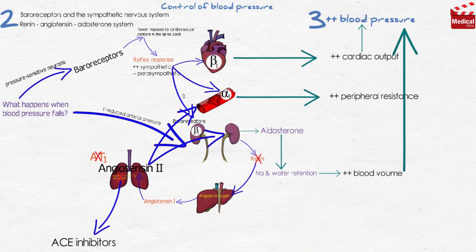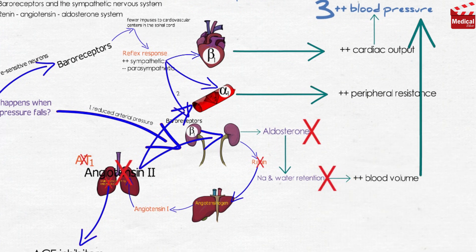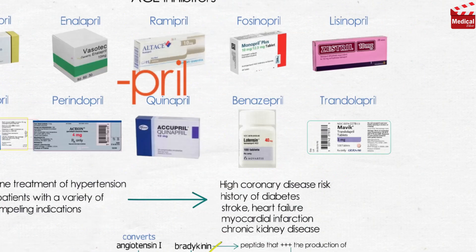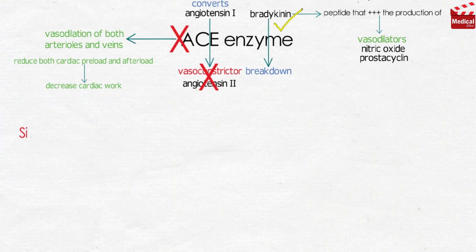By reducing circulating angiotensin-2 levels, ACE inhibitors also decrease the secretion of aldosterone, resulting in decreased sodium and water retention. So ACE inhibitors reduce both cardiac preload and afterload, decreasing cardiac work.